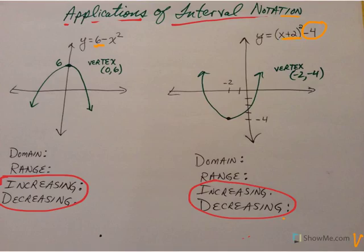And whenever you affect the input of a function, it moves the graph either east or west. And in this case, since it's a plus 2, it takes a negative 2 to zero that piece out. So the vertex gets shifted from the origin (0, 0). It moves left 2 units and down 4 units.